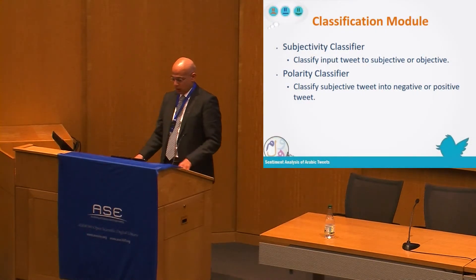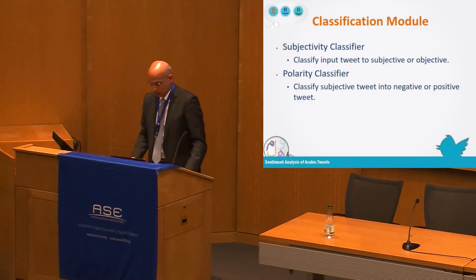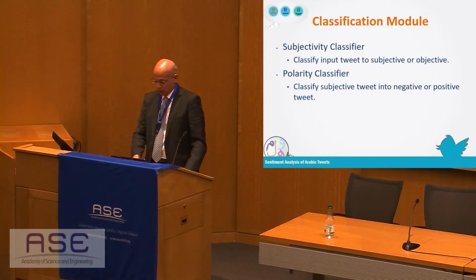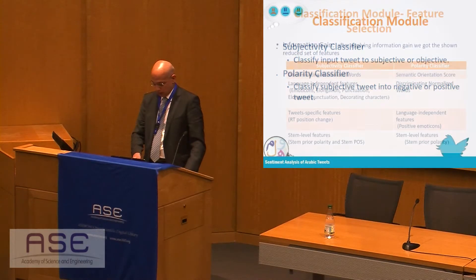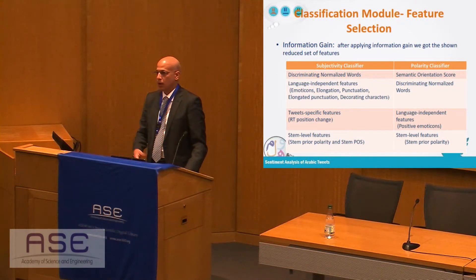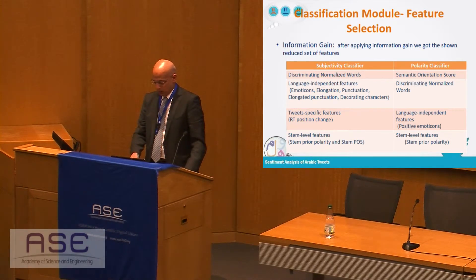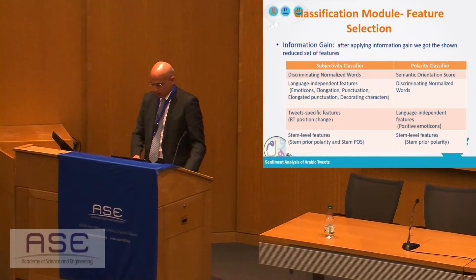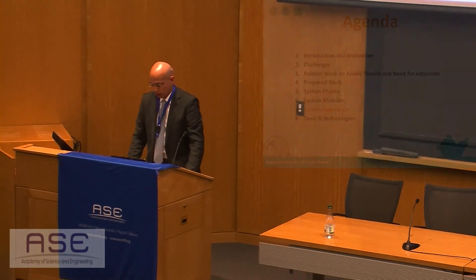We have two classifiers: a subjectivity classifier, and in the case of a subjective result, a polarity classifier that classifies tweets into negative or positive. Classification is done based on information gain theory to obtain a reduced set of features.